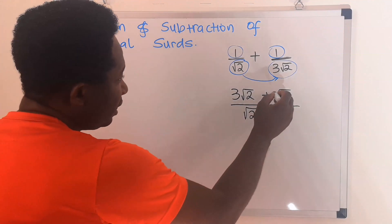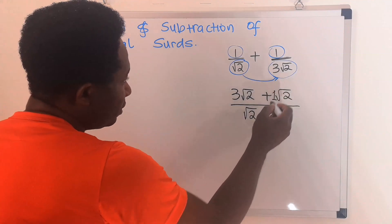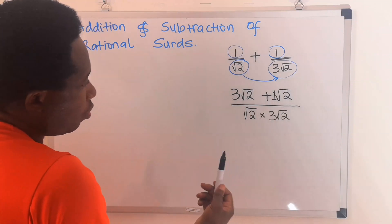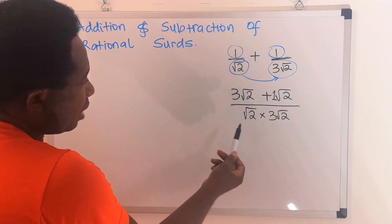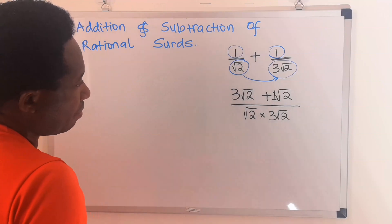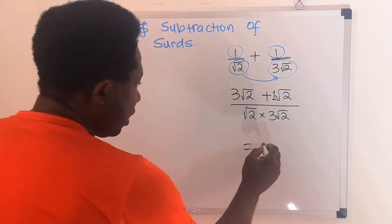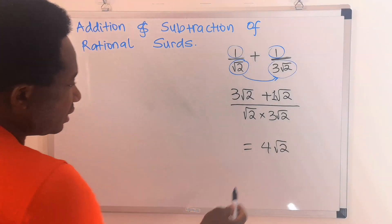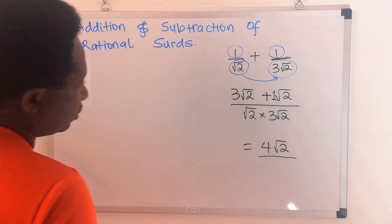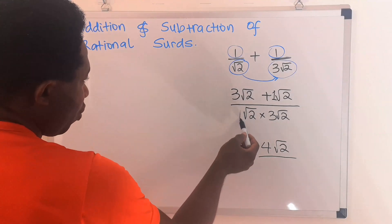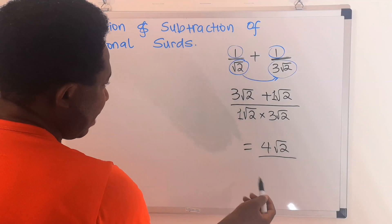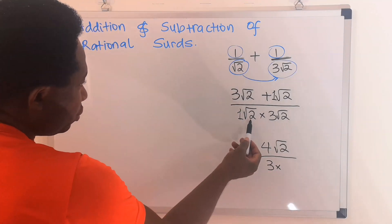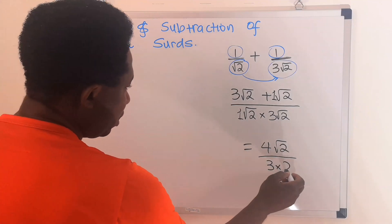This is like combining like terms — if this is mango and this is mango, we are going to have 3 mangoes plus 1 mango, and we are going to have 4 mangoes. Next, add the denominator. This is 1.